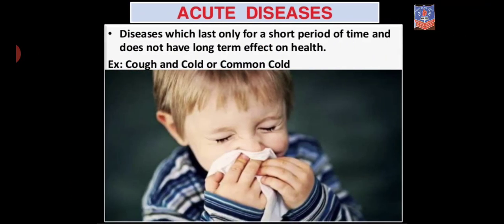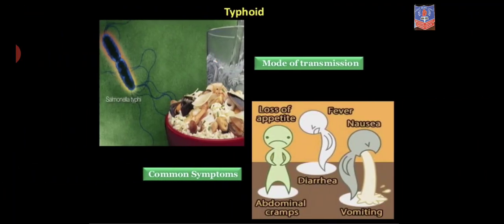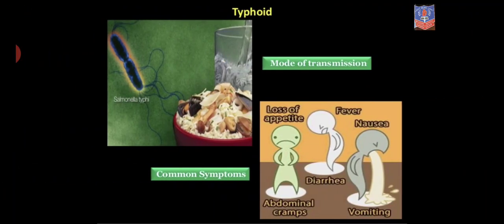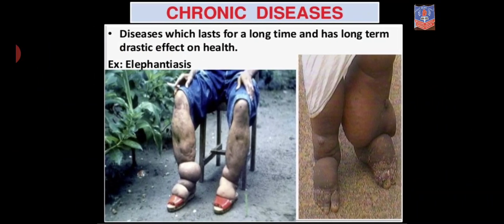Acute diseases last for a short period but may have effects. Examples are common cold, fever, and tiredness. Chronic diseases are those caused over a long time and which have drastic effects — for example, elephantiasis, AIDS, and diabetes.